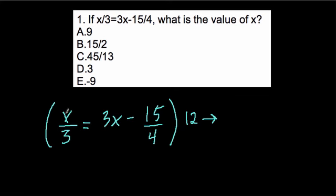What that will do is x over 3 times 12, what's that? Well, we're multiplying x by 12 and then dividing by 3, so it's 4x.